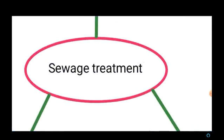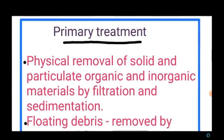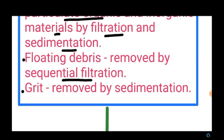Sewage treatment is usually performed in three stages. The first stage is primary treatment. During primary treatment there is physical removal of solid and particulate organic and inorganic matter by means of filtration and sedimentation. Floating debris is removed by sequential filtration, and grit — that is soil and small pebbles — is removed by sedimentation. All the solids that settle in the primary treatment tank are called primary sludge, and the supernatant watery substance is called primary effluent.